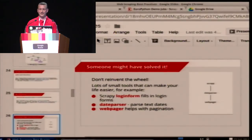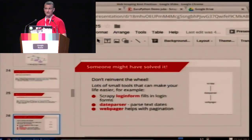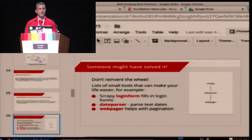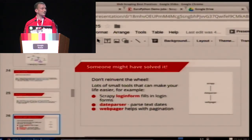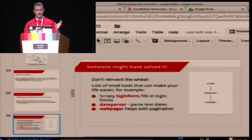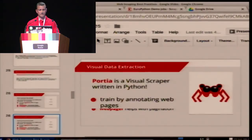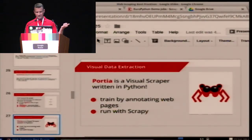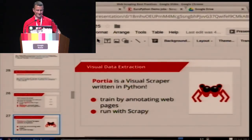Some examples of things we've done: we wrote a login form module for Scrapy that automatically fills in forms and logs into websites. We have a date parser module that takes textual strings and can build a date object from it. Webpager is another project we wrote which looks at an HTML page and pulls out links that perform pagination, which is often useful. I was going to live demo this but I think we're short on time — maybe it's not worth tempting fate, we've had enough technical problems already.